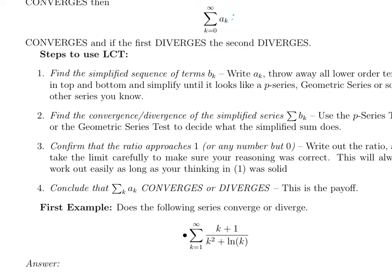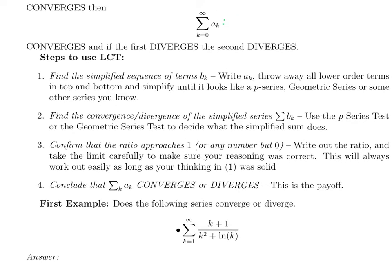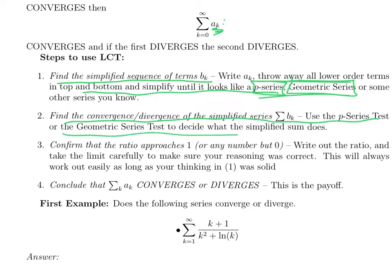Here's how to turn that into a recipe. If somebody hands you a series, we're going to call it sigma a_k. The first thing to do is define your b_k — that's going to be a simplified series. You write out a_k, throw away the lower order terms on the top and bottom, and simplify it until it looks like one of the series you know: p-series, geometric series, maybe one or two others. That's the first step, and it's the fundamental one. Second, you take that simple series and decide whether it converges using the p-series test or the geometric series test.